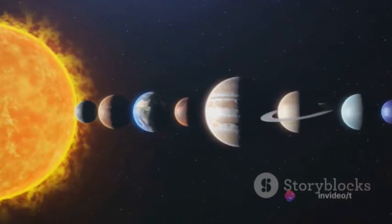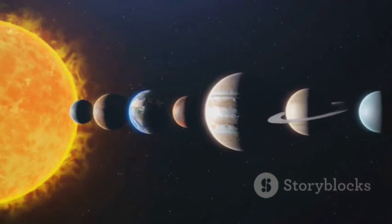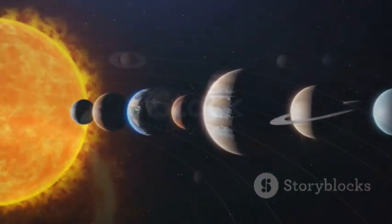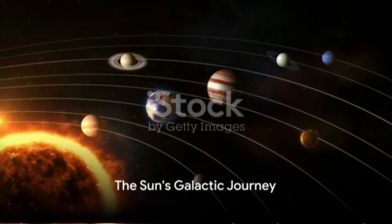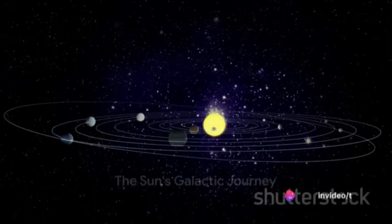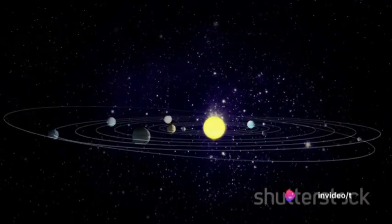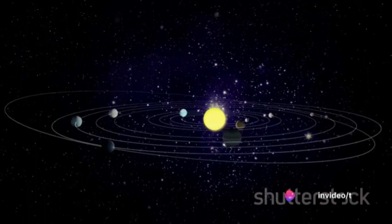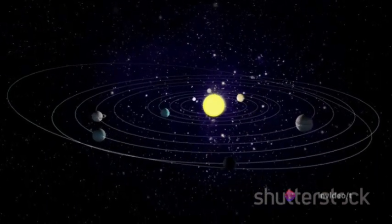They all revolve around the Sun in elliptical orbits, each with its own unique speed and distance. But the Sun isn't just sitting idle. It's not a static, unchanging point in space. It too is on the move, carrying the whole solar system along with it.